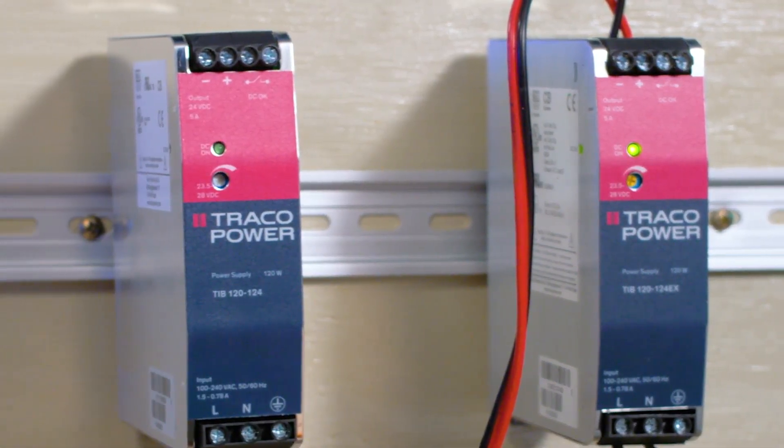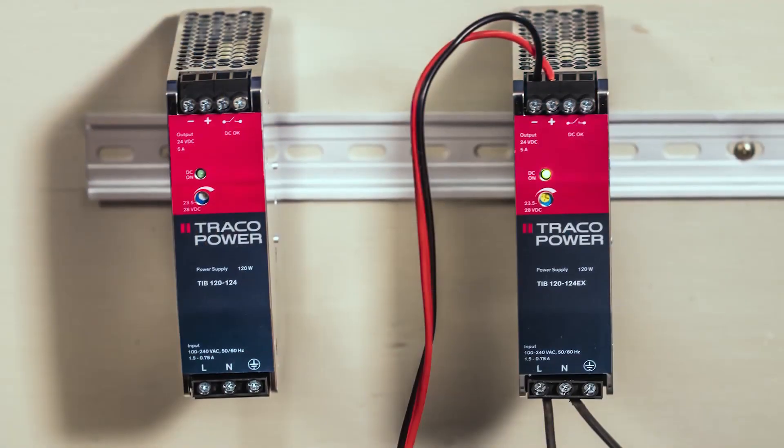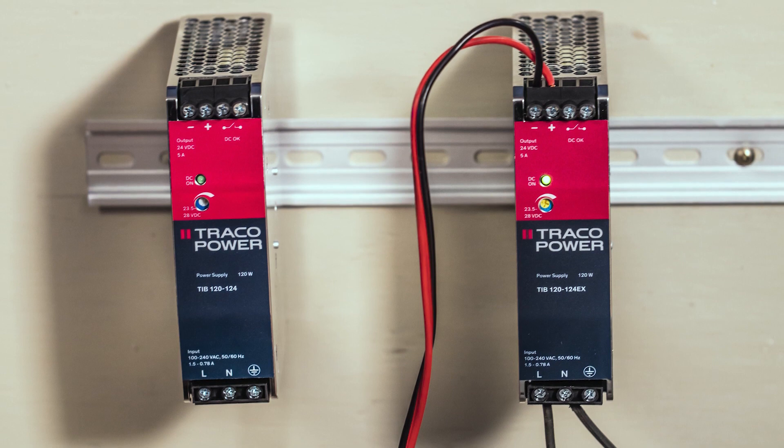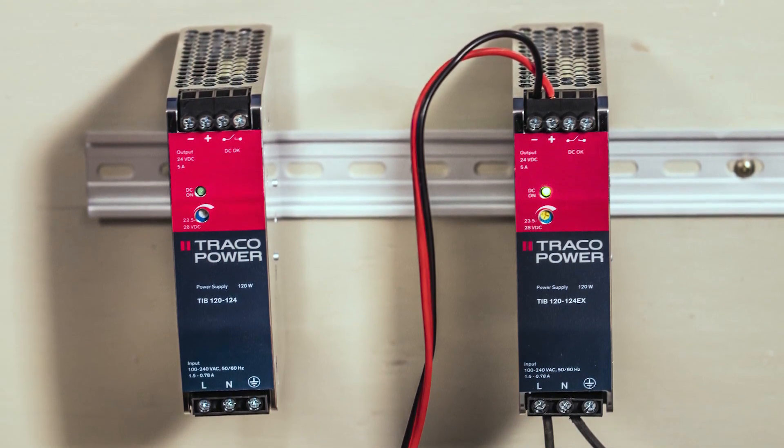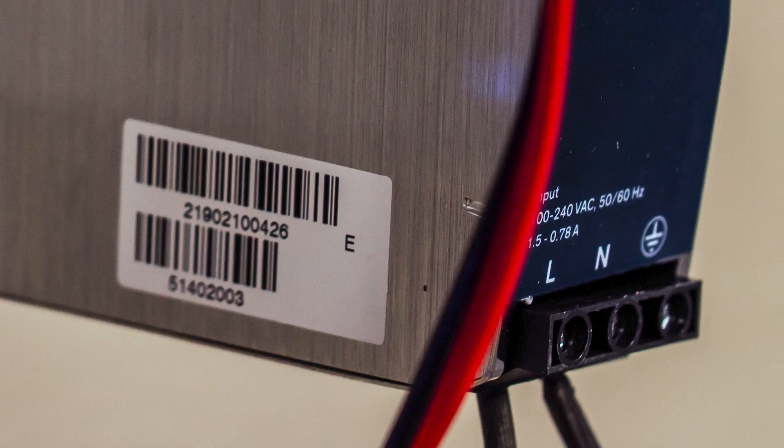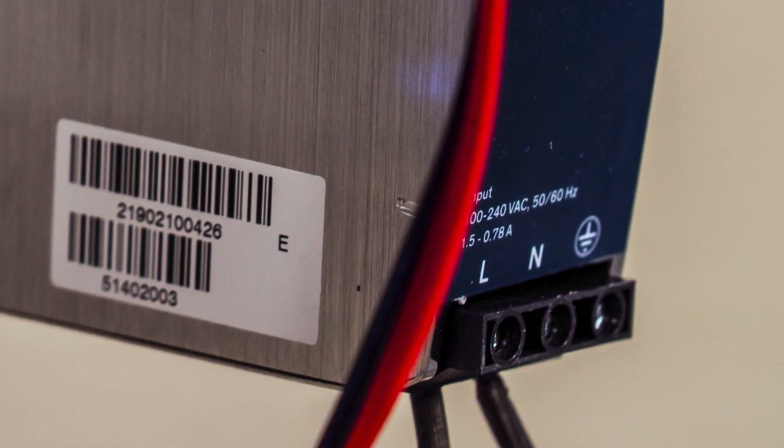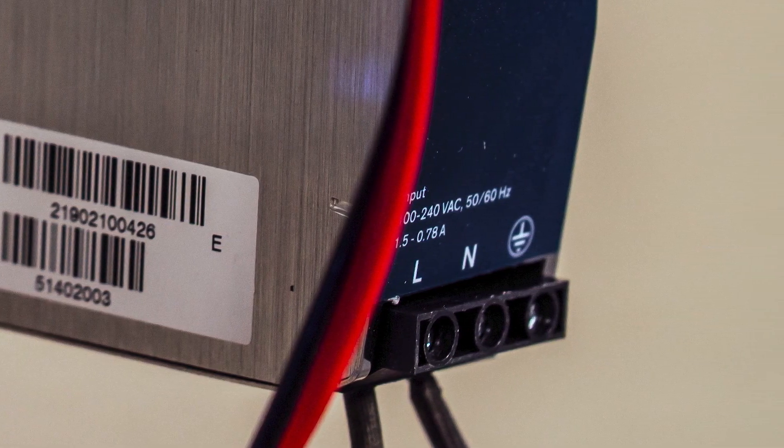We'll start our review of the TIB supplies with a look at their front panels. This is a typical dead front design with no live electrical connections that you can touch that most industrial controls adopt nowadays. The three input terminals, L, N, and earth ground are at the bottom of the supply.